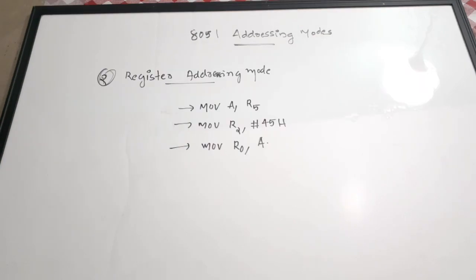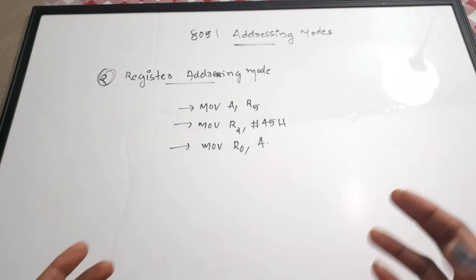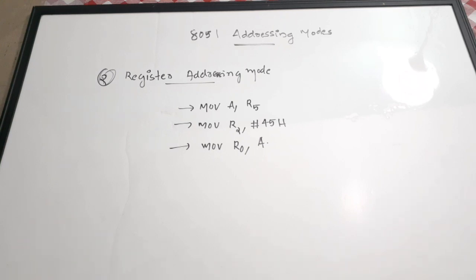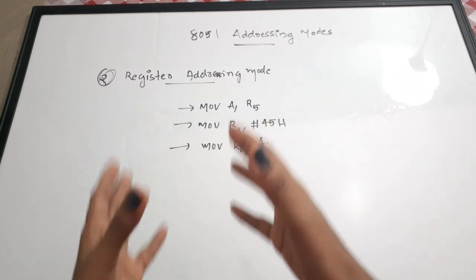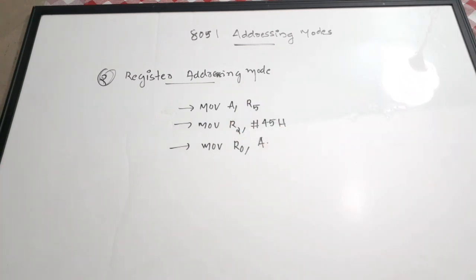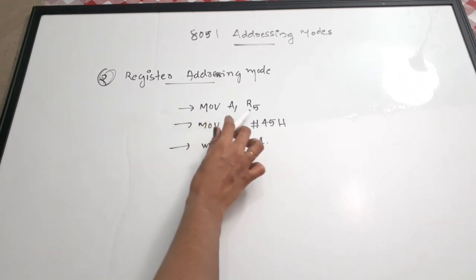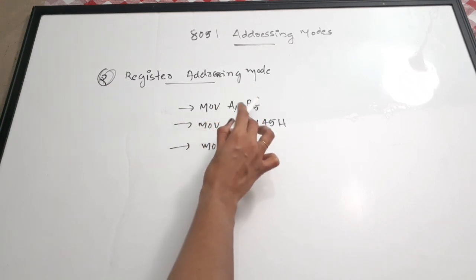The next is register addressing mode. Here either the source or the destination data is present in registers R0 to R7. We know there are registers R0 to R7 organized as various register banks. Either source or destination can be a register.